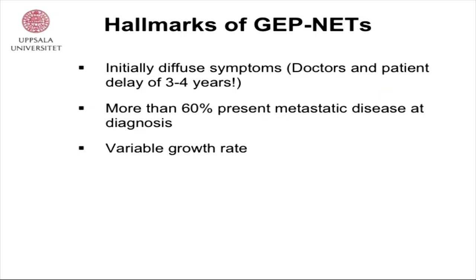Some hallmarks of patients with NETs are that the symptoms are initially diffuse. There is a long doctors and patients delay in many cases, and more than 60% of the patients have metastatic disease at presentation. The growth rate is variable and can also vary in individual patients — the disease can be stable for periods of time, then start to grow, then be stable again.